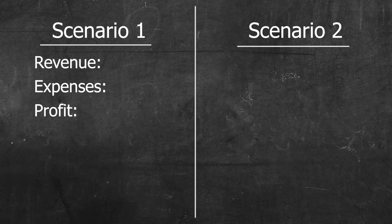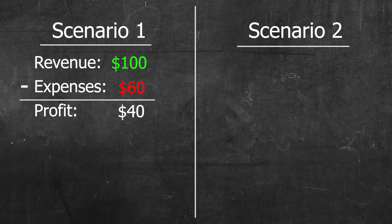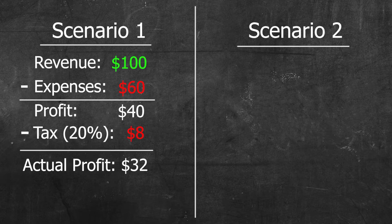So let's say your revenue is $100 and your net expenses are normally $60. This gives us a net profit of $40. From this $40, let's assume we pay around 20% in taxes, which is $8. So at the end of the day, we're left with $32.